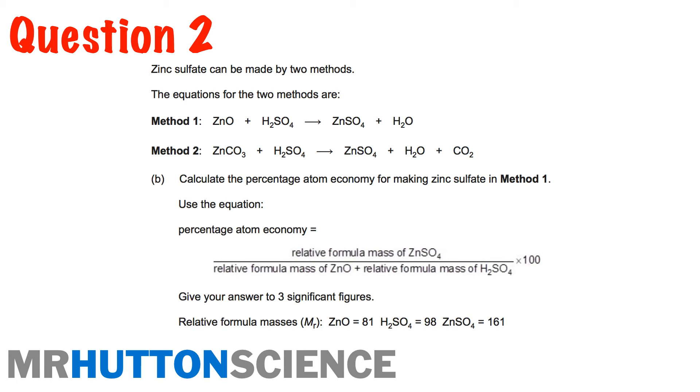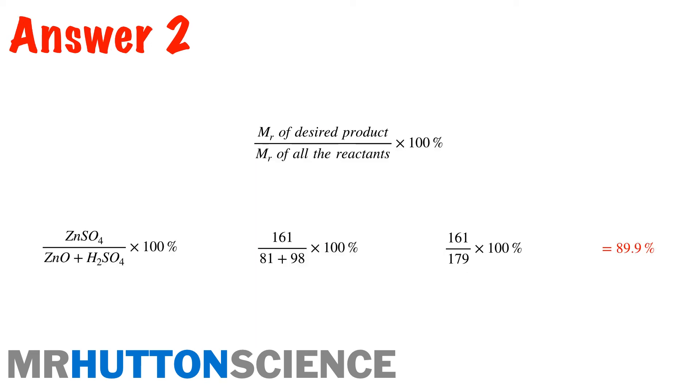Pause the video now and have a go. And then unpause in a moment. Okay. Right. There we are. So zinc sulfate divided by our zinc oxide and our sulfuric acid, 161 divided by 179, 89.9%. Brilliant. Hopefully you've got a similar answer, the same answer even. What you could do on this one is just go back and look at method two, and you could actually compare which one has the best atom economy.